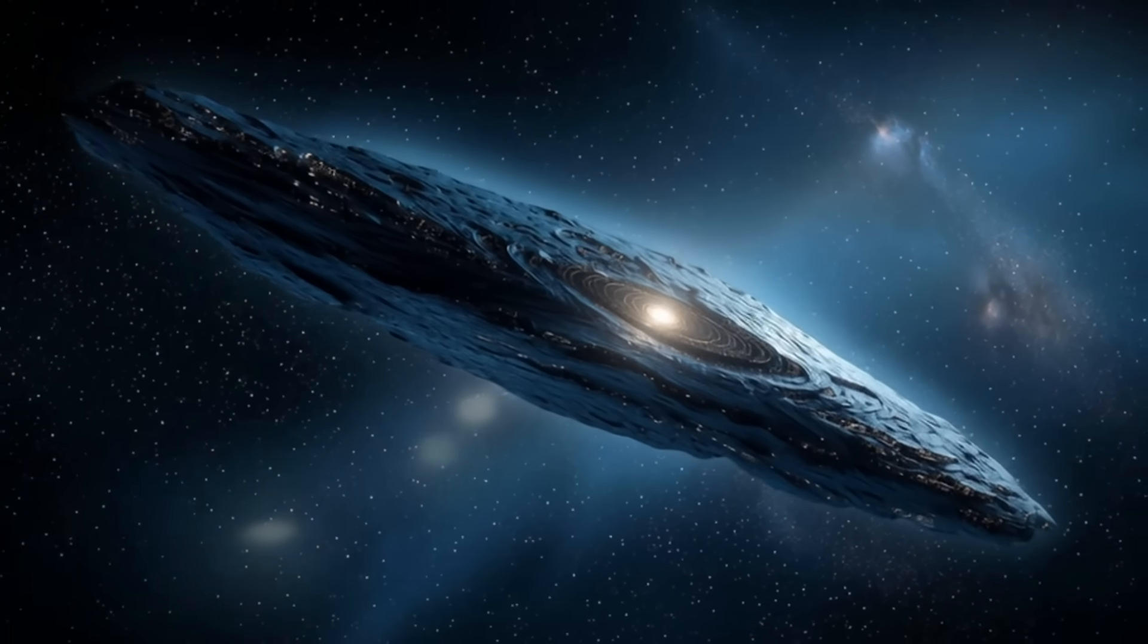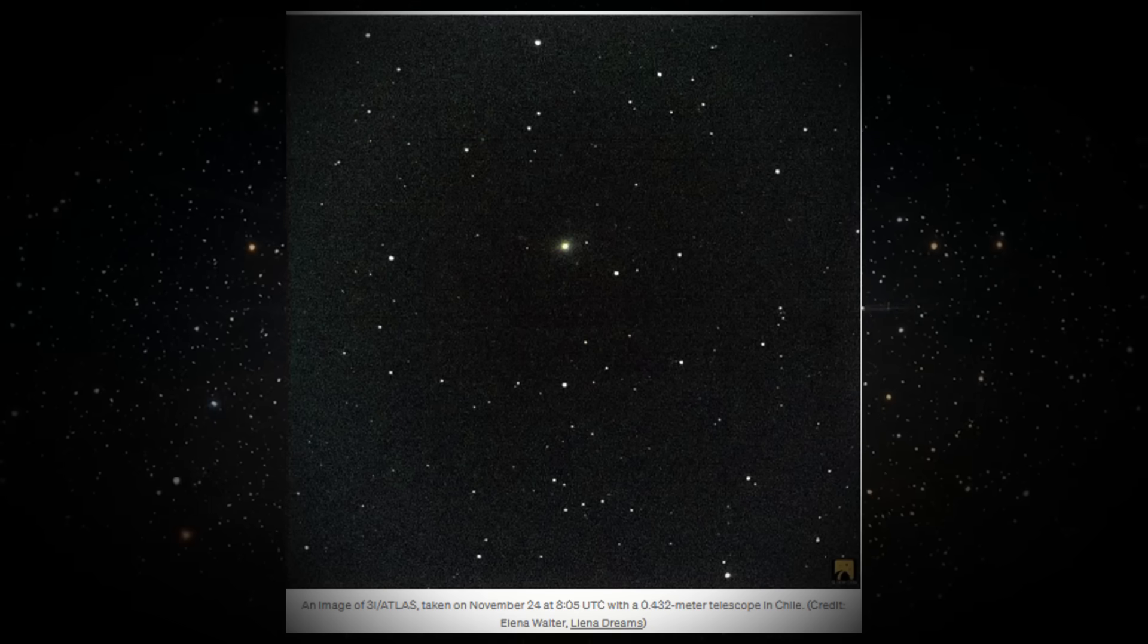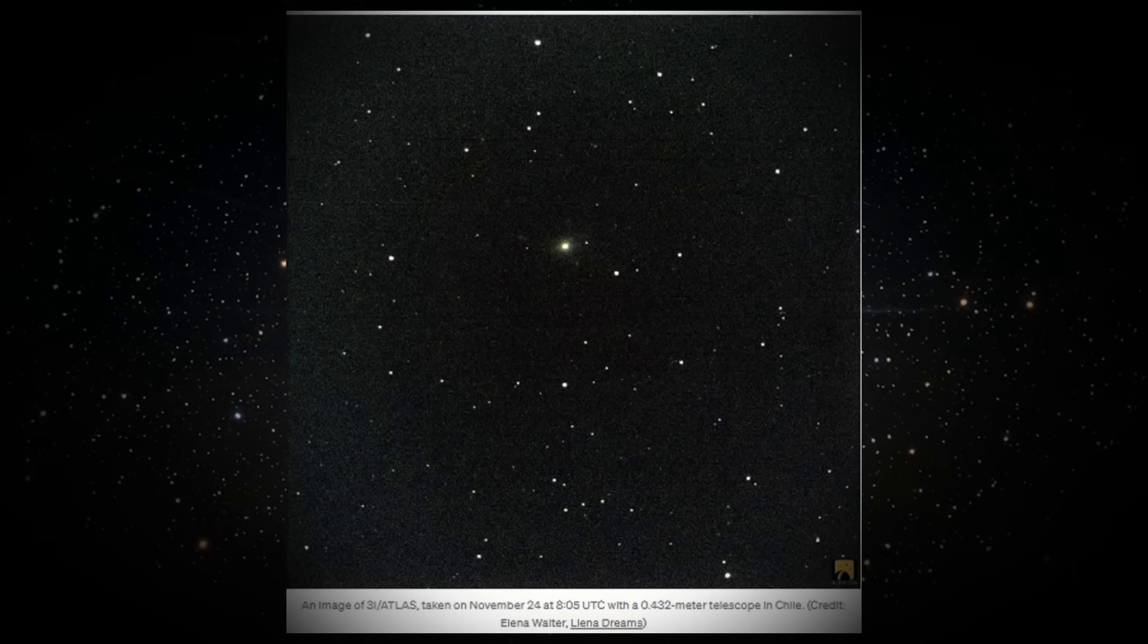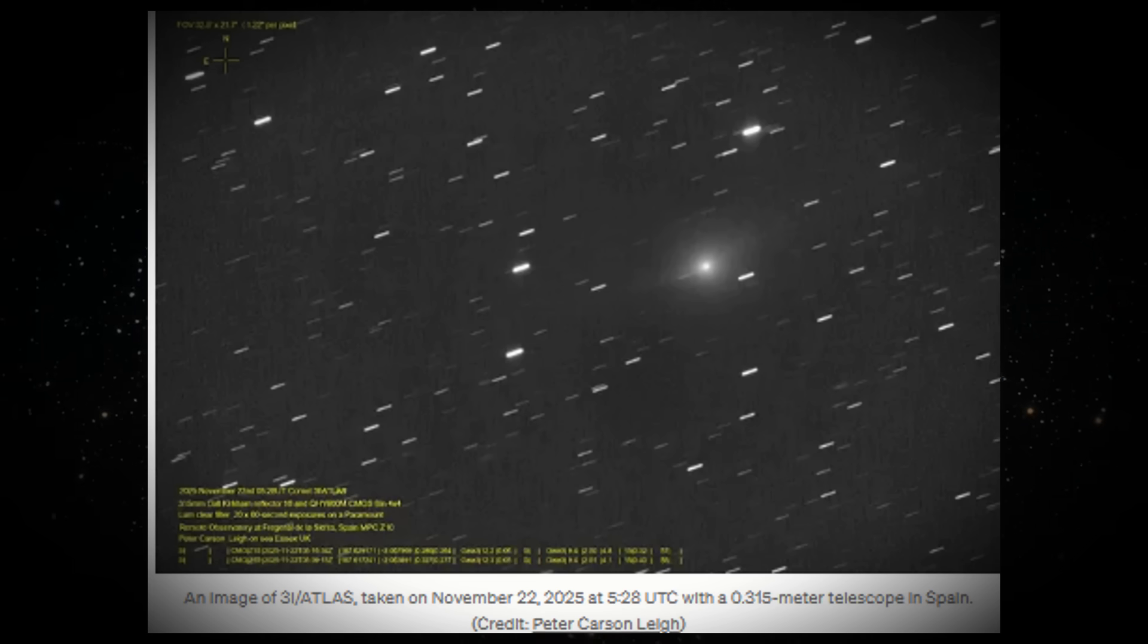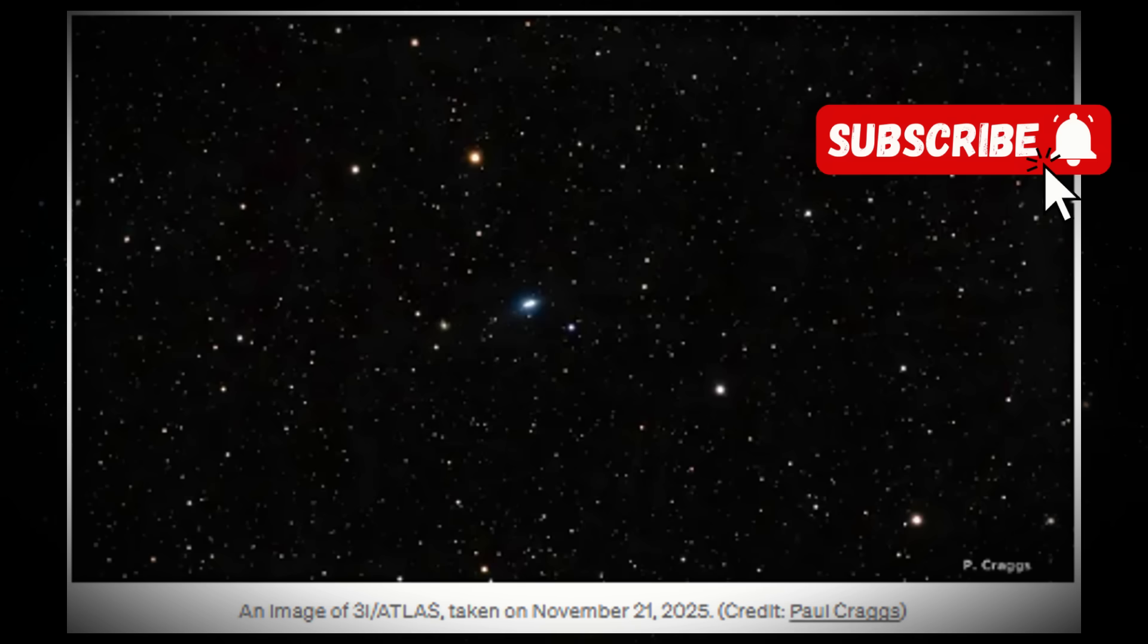This should be physically impossible, but it's exactly what's happening right now. On November 23rd, the famous Harvard astrophysicist Avi Loeb revealed something that is leaving the scientific community completely perplexed. An object called 3i Atlas, which literally came from another solar system,